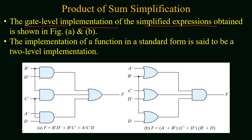Here we have a gate-level implementation of the simplified expressions obtained in the last example. Both are shown in figures a and b. The implementation of a function in the standard form is said to be a two-level implementation. Figure a represents the standard sum of product implementation, and figure b represents the standard product of sums implementation. If you analyze both, the functions are implemented in two levels, and this is the main benefit of the function in the standard form.